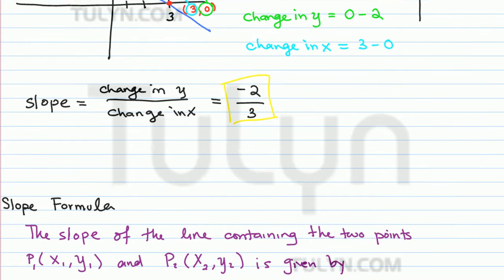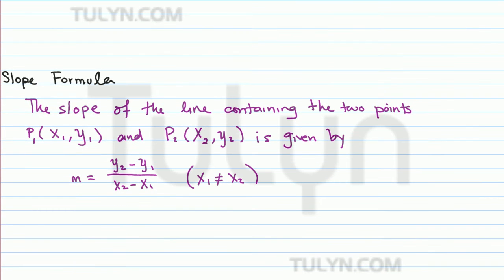Now in general, we have this definition which is called the slope formula. It states the slope of the line containing any two points, X1, Y1 and X2, Y2, is given by M equals Y2 minus Y1 over X2 minus X1, which you can reconcile with the example above. You take the Y coordinates and subtract them from each other, and divide that by the X coordinates subtracting them from each other. And you want to make sure that X1 is not equal to X2, because then we'll have a 0 in the denominator which would make the expression undefined.